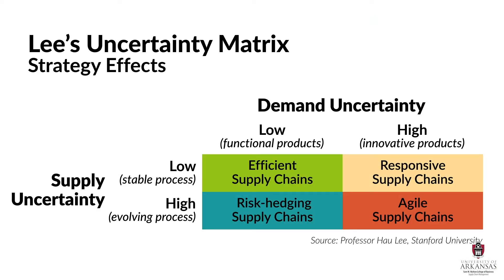Let's start by revisiting Professor Lee's uncertainty matrix, which tells us that supply chain strategy is a function of both supply and demand characteristics. In my opinion, this is hands-down the best framework for conceptualizing supply chain strategy. It gives managers clear guidance about when to use each type of strategy, and it gets all of us thinking about supply chains in terms of supply and demand uncertainty.